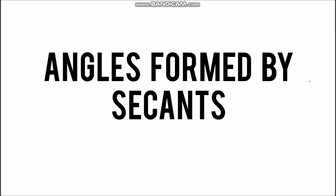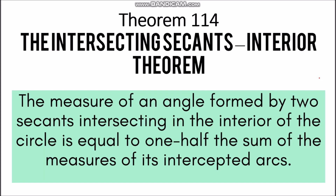For today's lesson, we will be discussing angles formed by secants. So let's have Theorem 114, or the Intersecting Secants Interior Theorem. This states that the measure of an angle formed by two secants intersecting in the interior of the circle is equal to one-half the sum of the measures of its intercepted arcs.